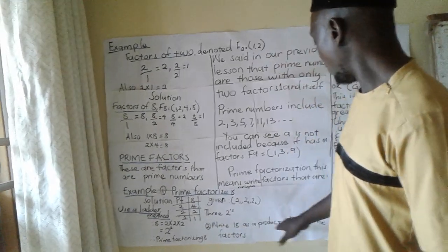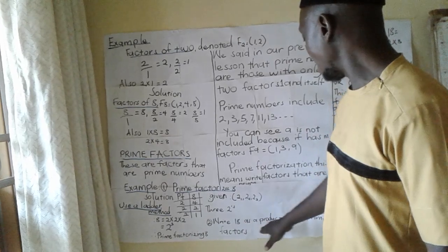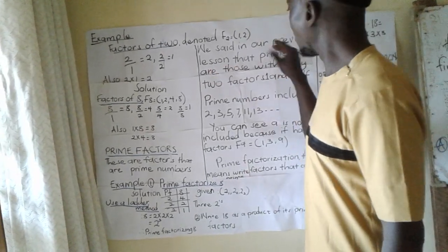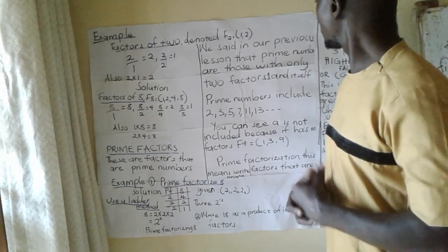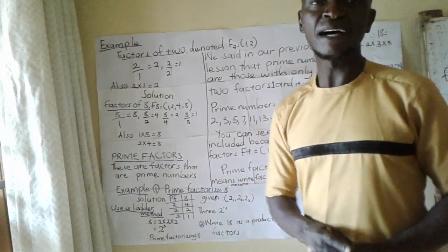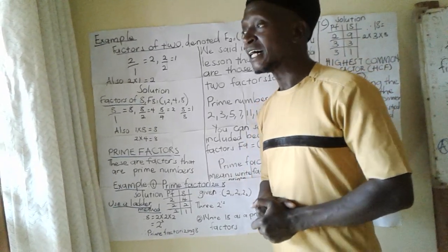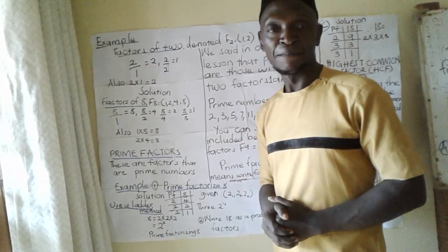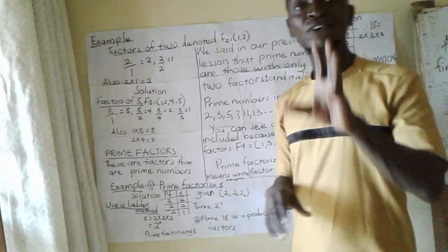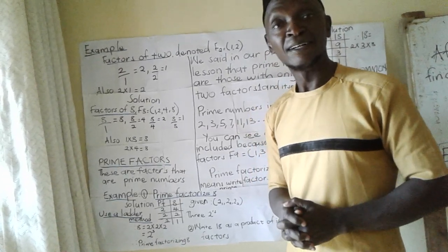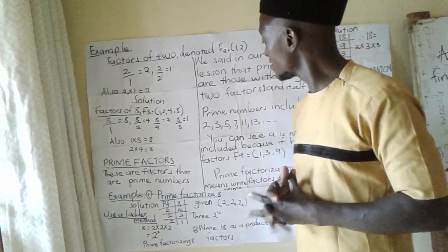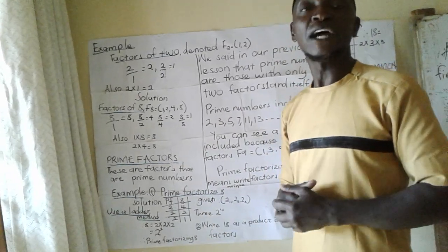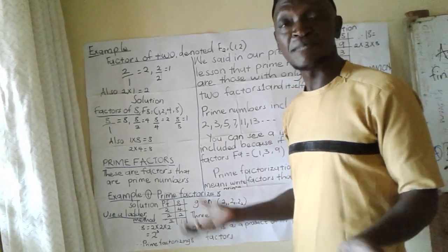When they say write 18 as a product of its prime factors, remember from our previous lessons, a prime number has only two factors: one and itself. Before I continue, don't forget to subscribe to my channel to get more of these lessons so that you can enjoy mathematics made simple.